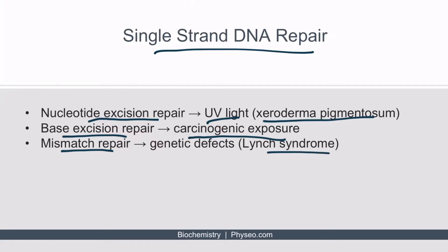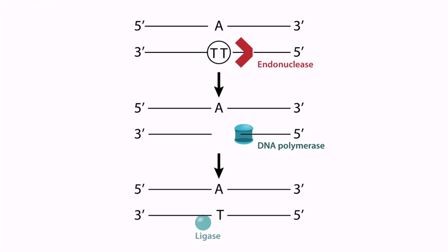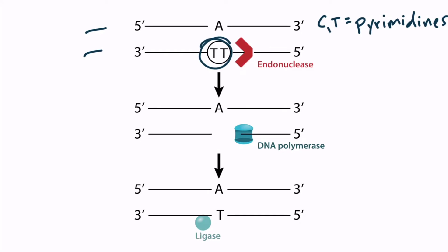Nucleotide excision repair is responsible for repairing bulky DNA alterations such as pyrimidine dimers. Recall that thymine and cytosine are both pyrimidines in DNA. From the figure, there are two strands of DNA — one on top and a complementary strand on the bottom. Two T's shown together in a circle represent two thymine molecules bound to each other — a pyrimidine dimer — which usually occurs due to UV radiation.